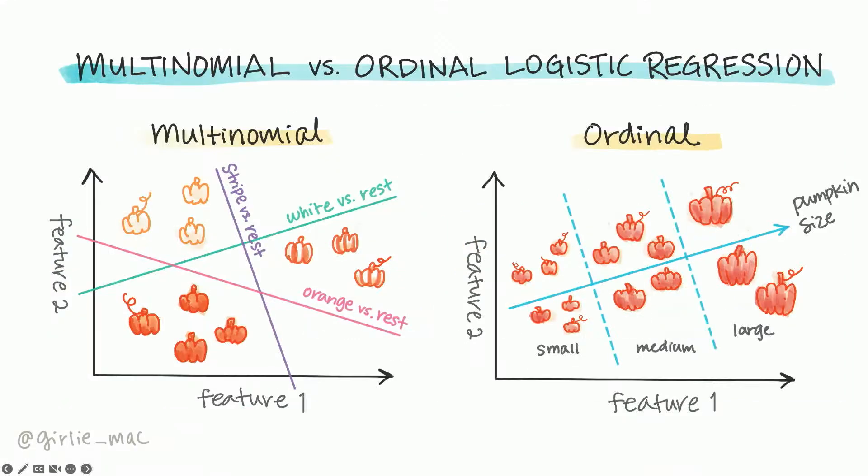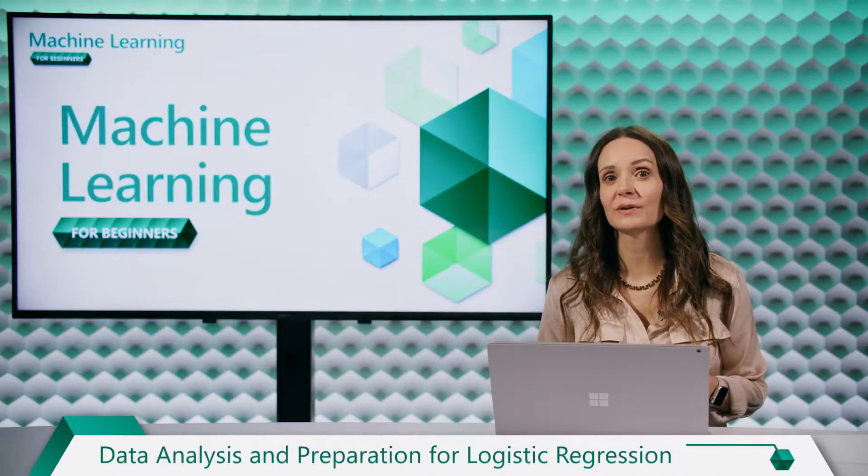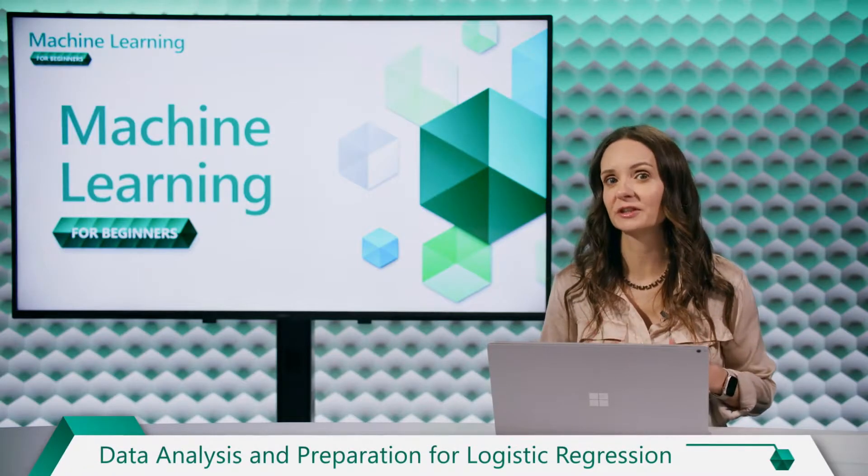You can use ordinal logistic regression when you want to predict an ordered outcome, for example if you're predicting whether the pumpkins are small, medium, or large. You learned a lot in this video. In the next few videos you'll be writing code that applies the theory you just learned, so stay tuned.